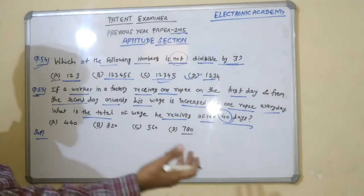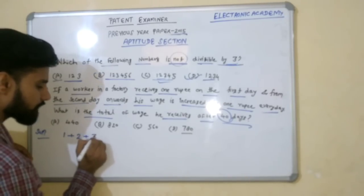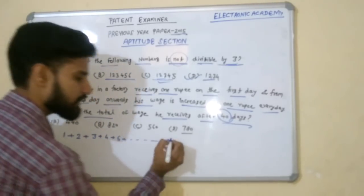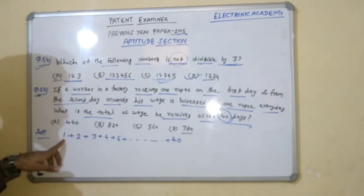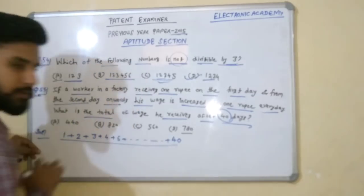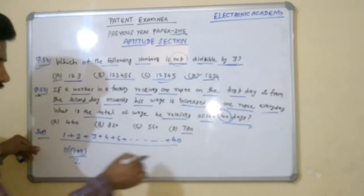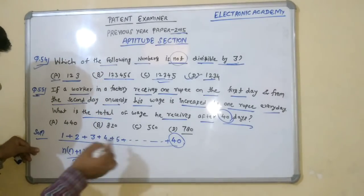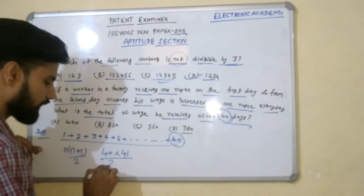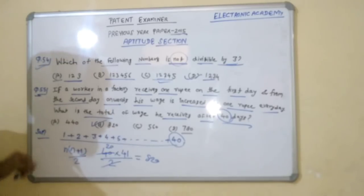The solution is very easy because this becomes the sum of first n natural numbers. The formula is n × (n + 1) / 2. Here n = 40, so we calculate 40 × 41 / 2 = 20 × 41 = 820. So option B, 820 rupees, is the correct answer.